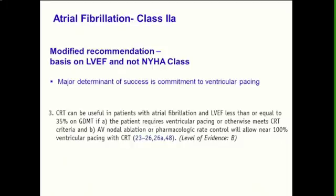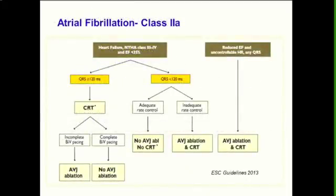The new guidelines don't take functional class into account for AF, but this is based on an EF of 35%. The European guidelines address this with more clarity: patients with a reduced EF and uncontrollable heart rate and any QRS duration should be committed to AV junction ablation and CRT. If the QRS is more than 120 milliseconds, CRT is indicated but the patient must be committed to ventricular pacing. If the QRS is less than 120 and rate control is adequate, CRT is not needed. However, if rate control is inadequate, then again AV junction ablation and CRT.